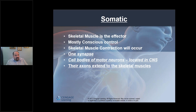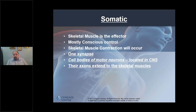Starting with the somatic nervous system — the key issue is that it involves one synapse. The autonomic nervous system involves two synapses. Recall that a synapse is just the junction: in the somatic nervous system it's the motor neuron's axon terminal interacting with skeletal muscle.